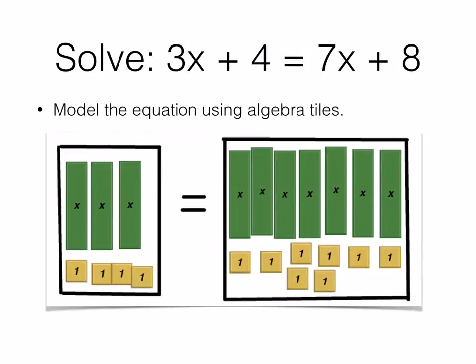So we put 3 x's, positive x's, and 4 positive 1's on the left side, and on the right side of the equation 7 x's and 8 positive 1's.